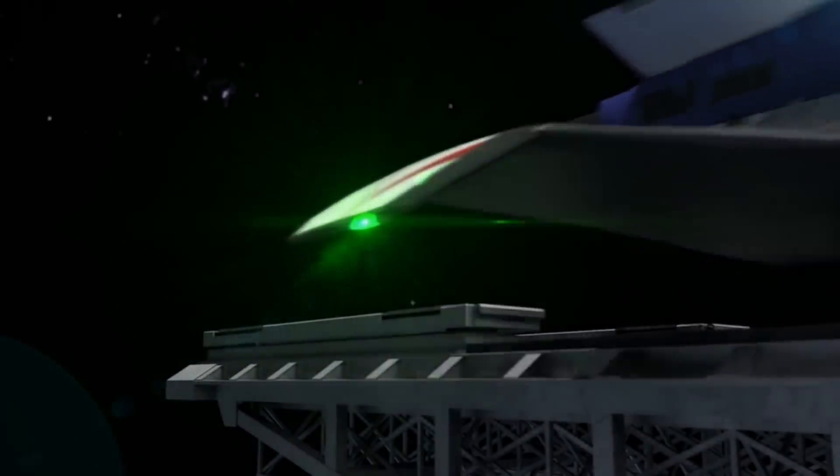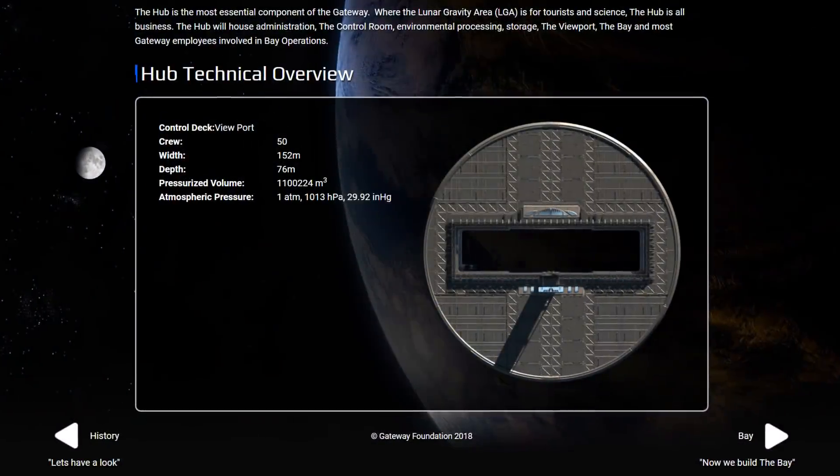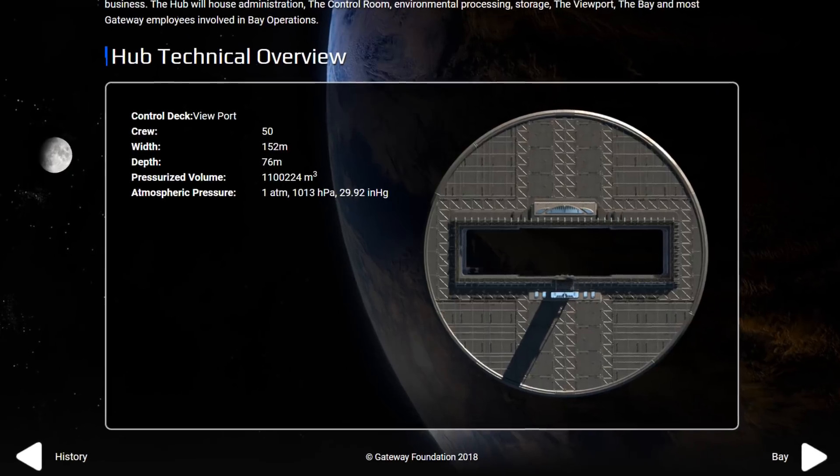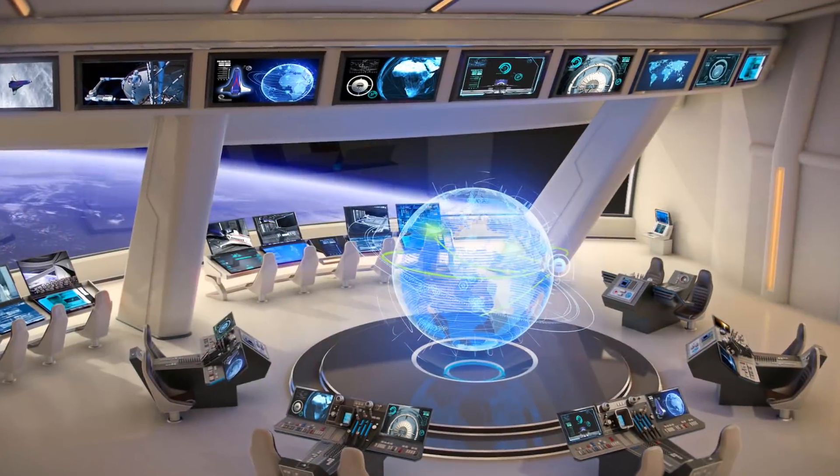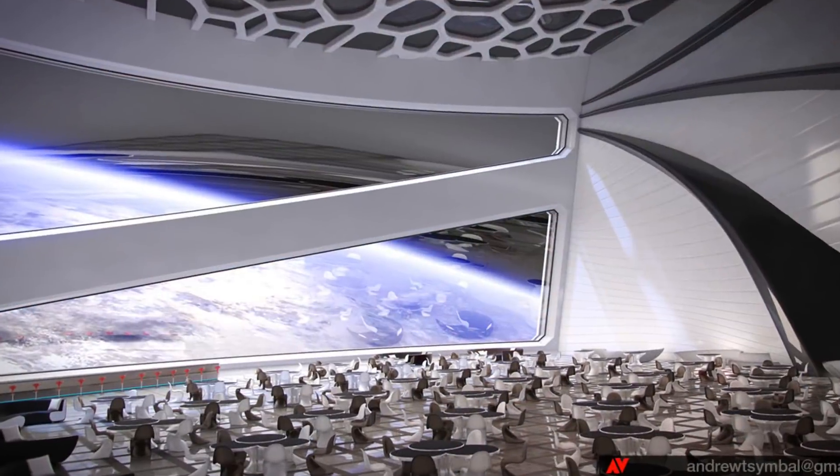People traveling to Earth from colonies on the moon and beyond will travel to the Gateway on what the Foundation calls true spaceships and then they will travel between the Earth and the Gateway on shuttles. The Gateway will have a crew of 150 and a guest capacity of 1,250. The Gateway has four main components. First is the hub measuring 150 meters wide. This is where the control room, storage, and viewport is located.